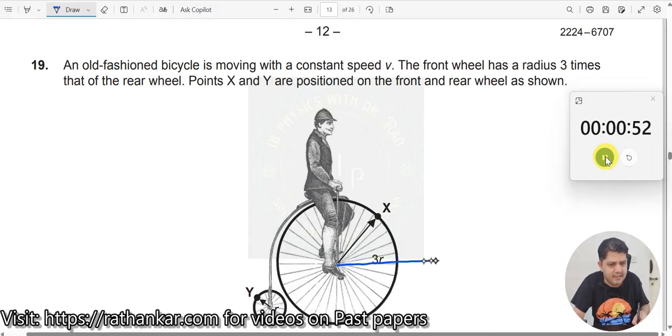So, this point is moving at a constant speed. This man is also moving at a constant speed. The front wheel has a radius 3 times that of the rear wheel.